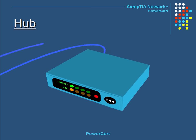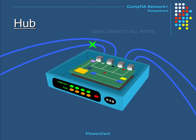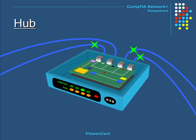A hub is a device that has multiple ports that accepts Ethernet connections from network devices. A hub is considered not to be intelligent because it does not filter any data or have any intelligence as to where data is supposed to be sent. When a data packet arrives at one of the ports, it is copied to all other ports so all devices on that hub see the data packet. There are two different types of hubs — passive and active. A passive hub does not require power, but an active hub does.